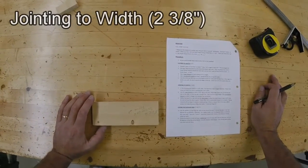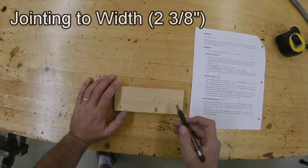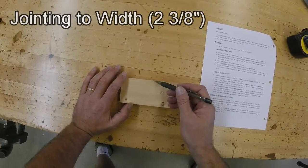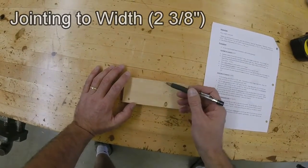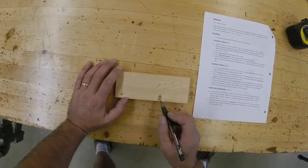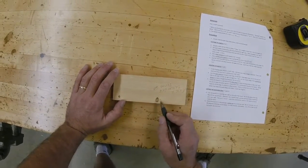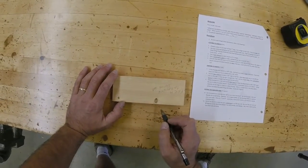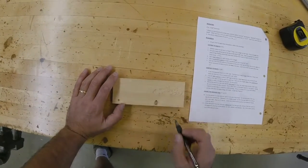All right, step seven, jointing to width, two and three-eighths of an inch. We want to make this board, instead of two and a half inches wide, two and three-eighths. I notice as I'm looking at this board, there's this knot right here. I don't want to try to joint through that knot, so I'm going to joint from this edge instead.